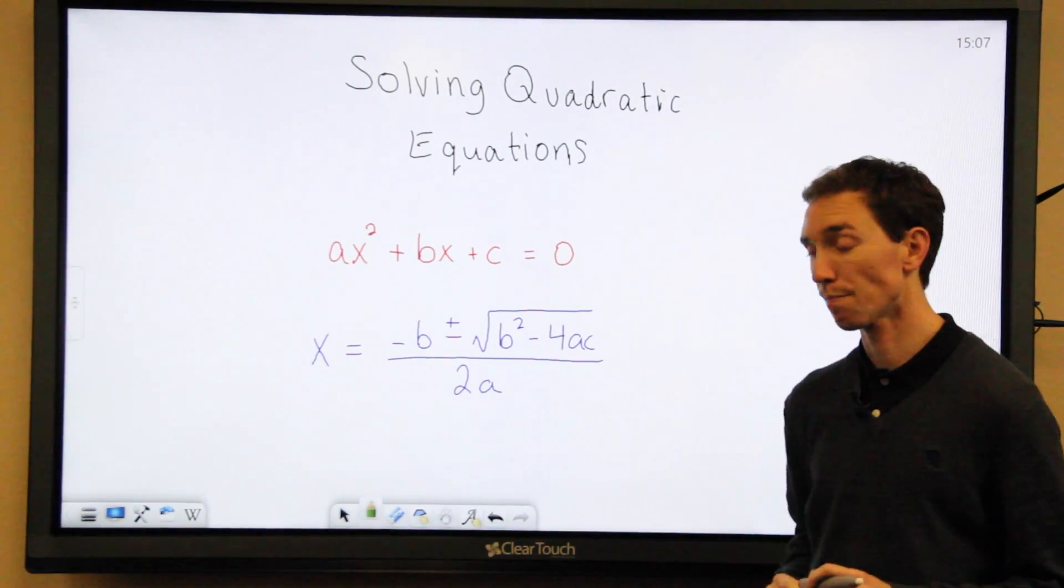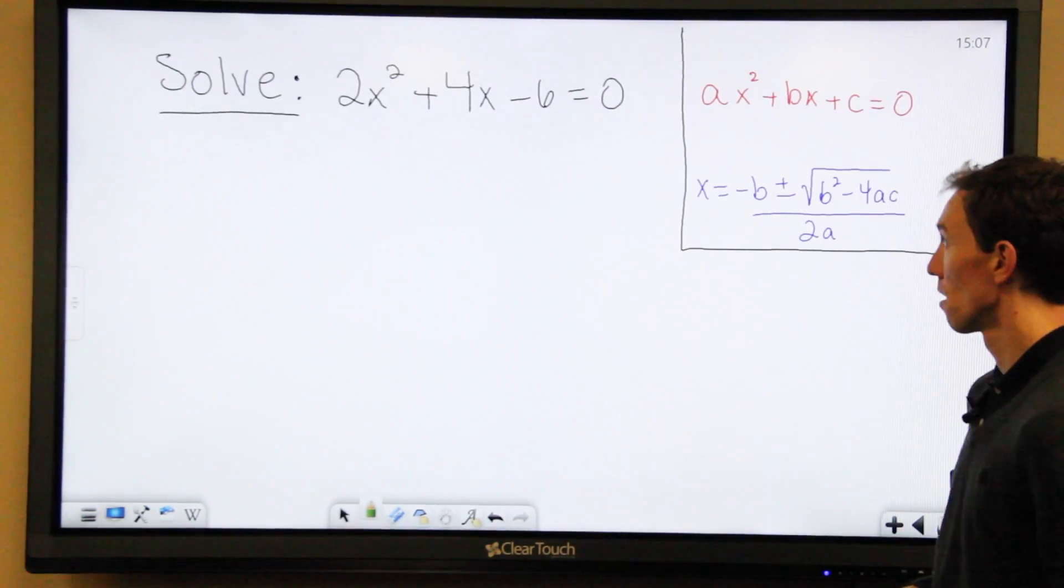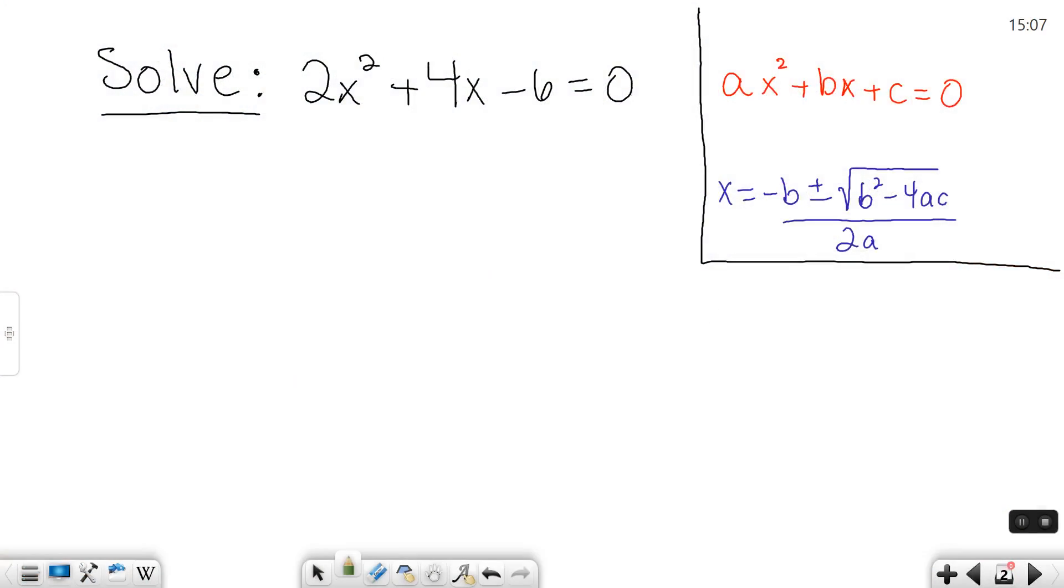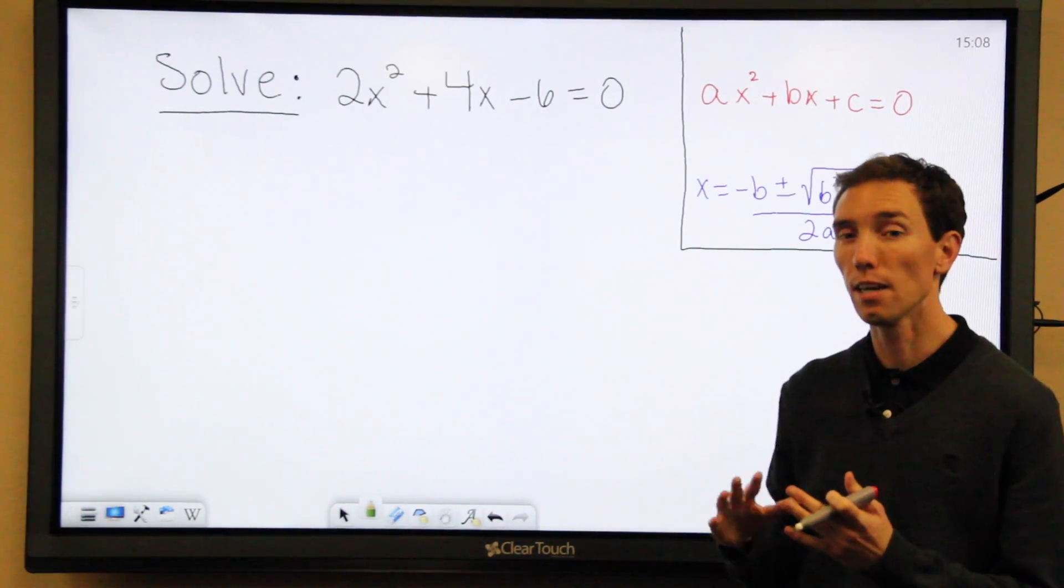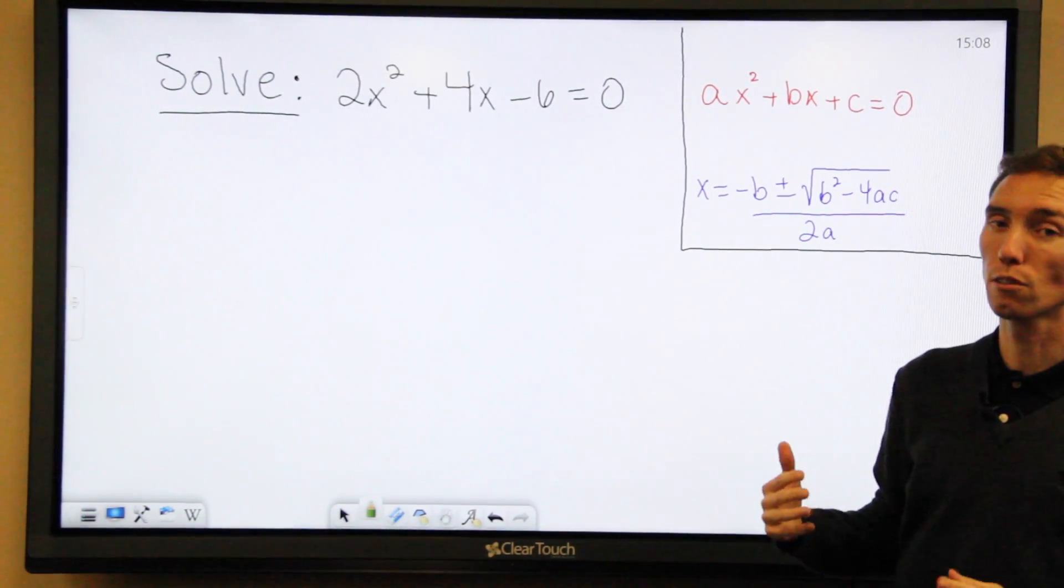So let's try a couple of examples. In the first example, I've written up the standard form and the formula for the solution as a reminder. For the next one we do, I'm not going to do that. So we have 2x squared plus 4x minus 6 equals zero. So we need to figure out what's a, what's b, and what's c, and plug them into our formula to solve.